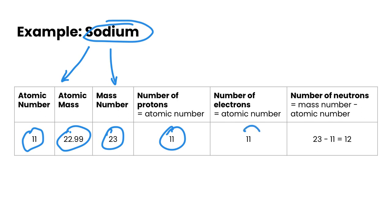For a neutral atom, the number of electrons is also 11, which matches our atomic number. The number of neutrons is our mass number of 23 minus our atomic number of 11, which gives us 12 neutrons. We need all of this information to build up our Bohr-Rutherford diagram.